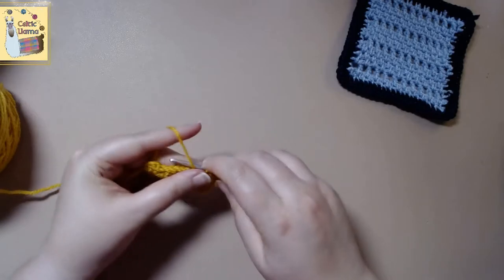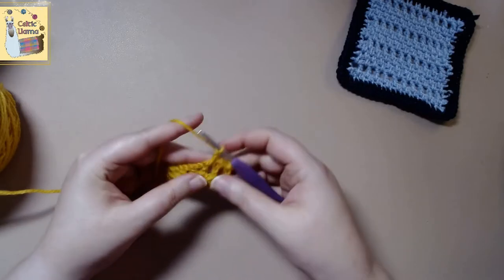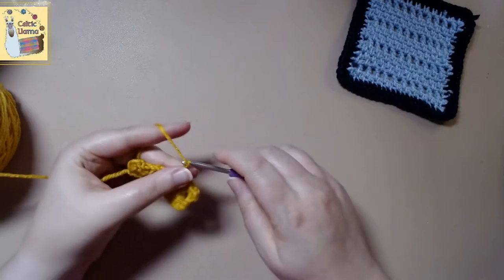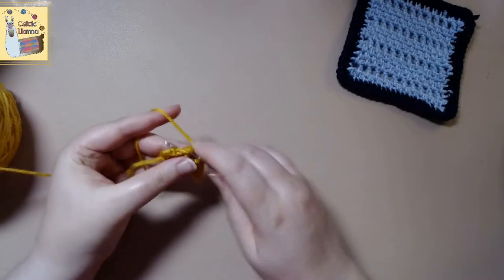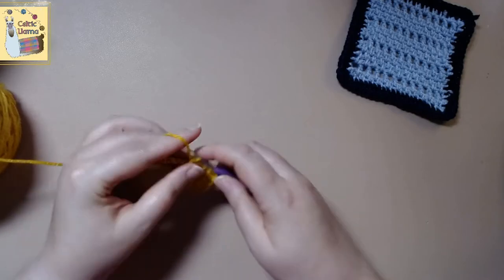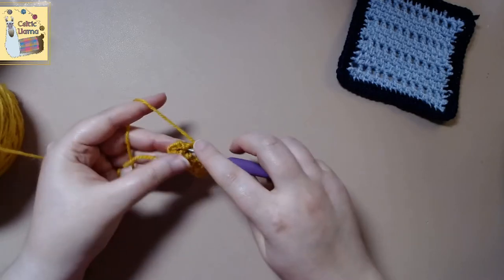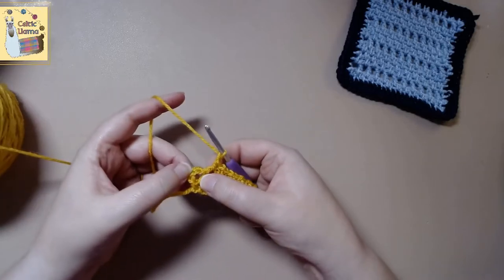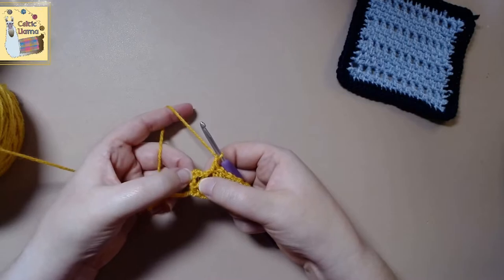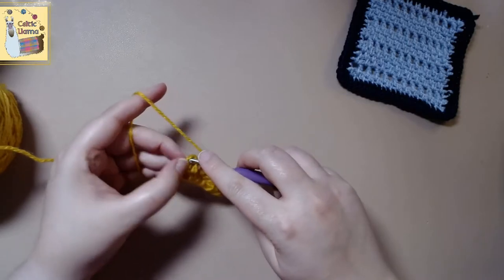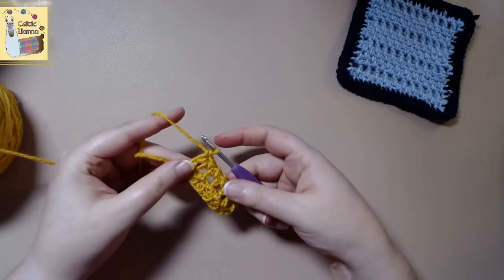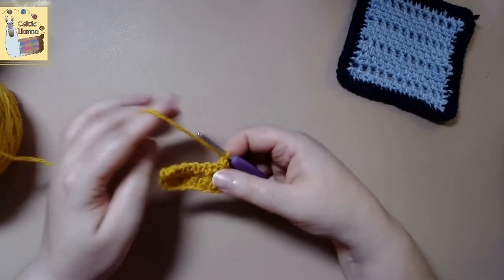So single crochet, chain one, and then single crochet, chain one. And again here, we want to instead of going into that chain one gap, we want to actually single crochet into the side chain. There we go. And you can kind of see that's giving it a nice straight line.